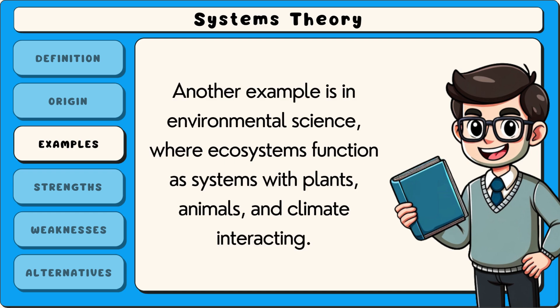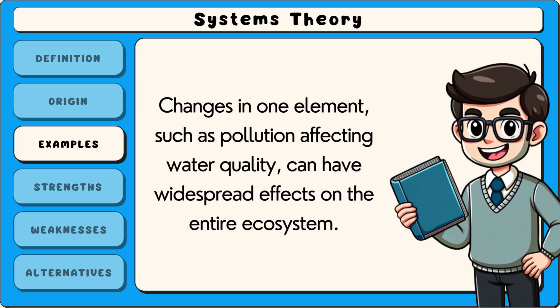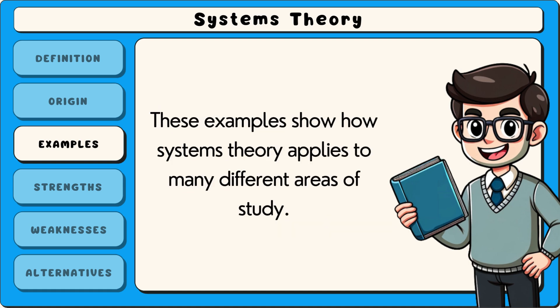Another example is in environmental science, where ecosystems function as systems with plants, animals and climate interacting. Changes in one element, such as pollution affecting water quality, can have widespread effects on the entire ecosystem. These examples show how systems theory applies to many different areas of study.